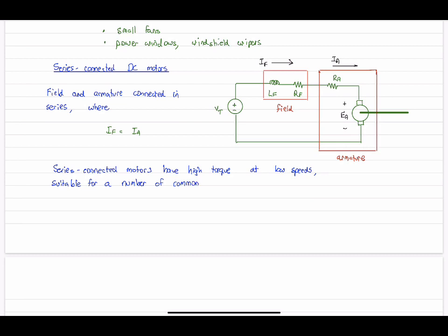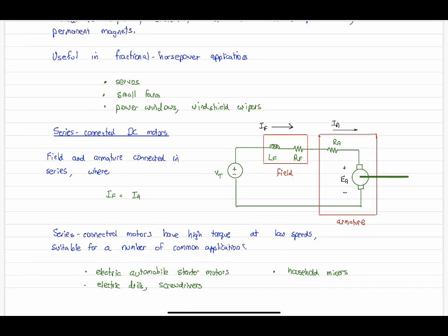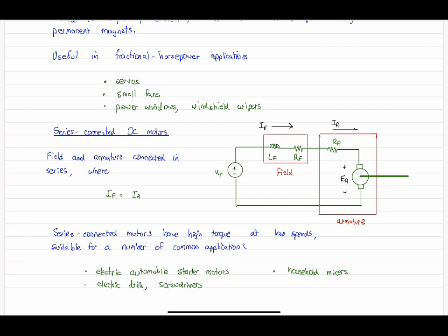So this is useful for a number of common applications, just to list a few of them. Electric automotive starter motors. That's a big deal, especially on a cold morning. It's not cranking very fast, but it's got to have a lot of torque. And electric power tools, for example, drills and screwdrivers. And around the house, household mixers and kitchen appliances and things like that. So just to very briefly sum up. We talked about the machine configurations. We looked at the shunt connected machine in particular. And then we finished off with just a very quick summary of the other machine configurations. Thank you.